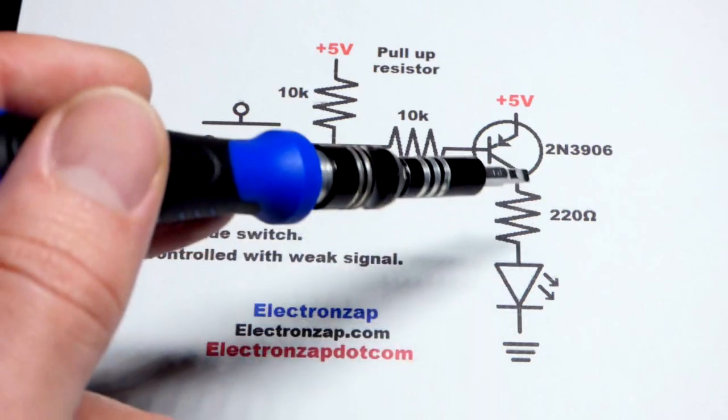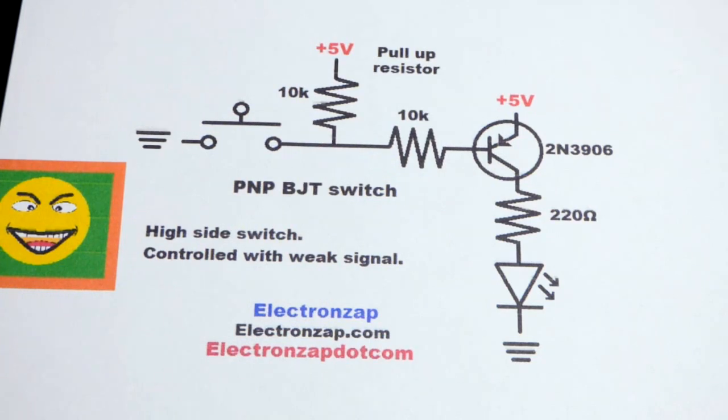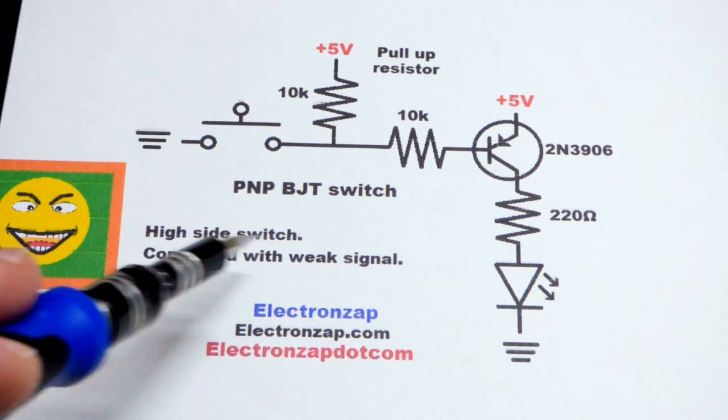And really the load will set the current, it'll be whatever the load wants with just a little bit of losses as far as the transistor is concerned. But in any case, one nice thing about this is it's on the high side of the load.